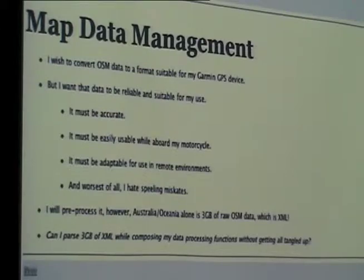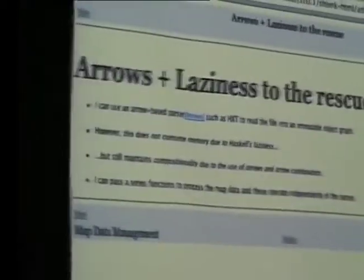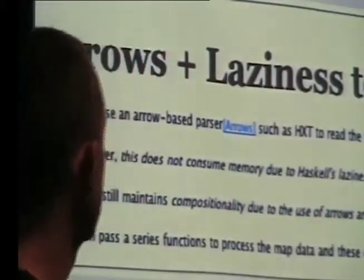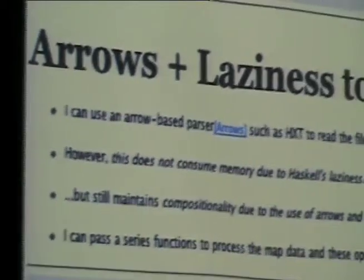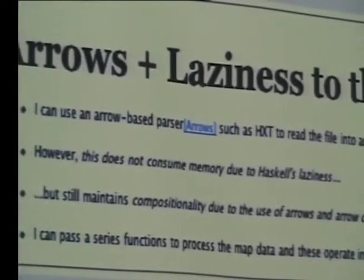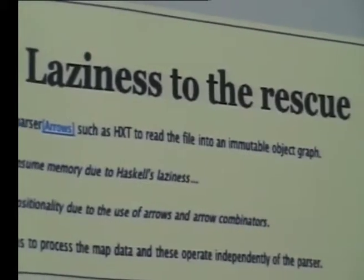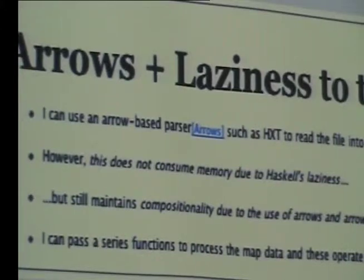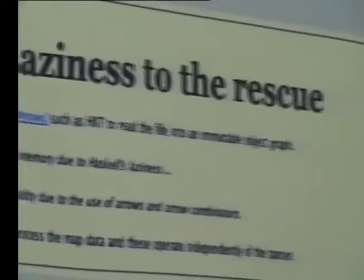Can I do that with three gigabytes? There's a technique of parsing - there's monadic-based parsing, which I think we've done as a group before. There's another way called arrow-based parsing, which gives you different benefits. One of those benefits is that it will work on this data, whereas monadic parsing will not, just because of the sheer size of it. Essentially, I want to be able to read this data into an immutable object graph without consuming three gigabytes of memory.